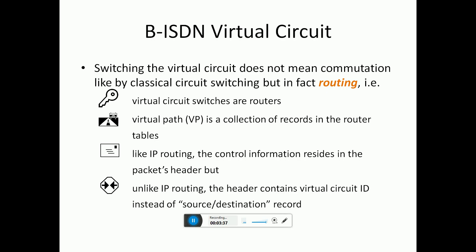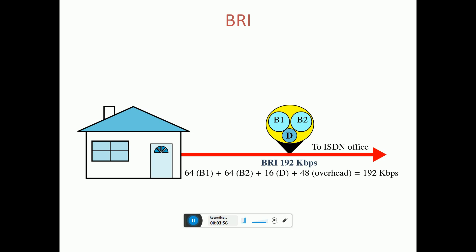B-ISDN virtual circuit switches act as routers. Virtual paths collect records in a router table similar to IP routing. Control information resides in the packet header, but unlike IP routing, the ATM header content includes virtual circuit ID, source, destination, and recording. This is shown via virtual circuits V1 and V2 with their directions.